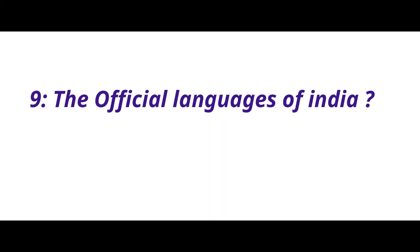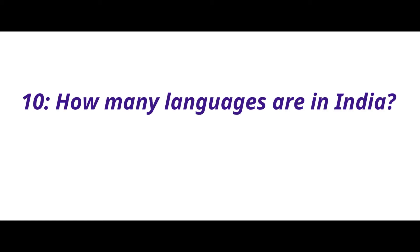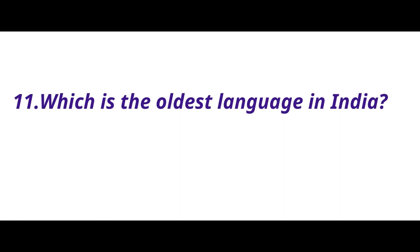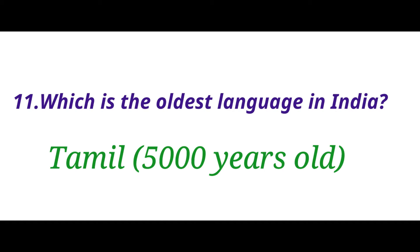What are the official languages of India? The answer is Hindi and English. How many languages are in India? There are 22 major languages in India. Which is the oldest language in India? The answer is Tamil.